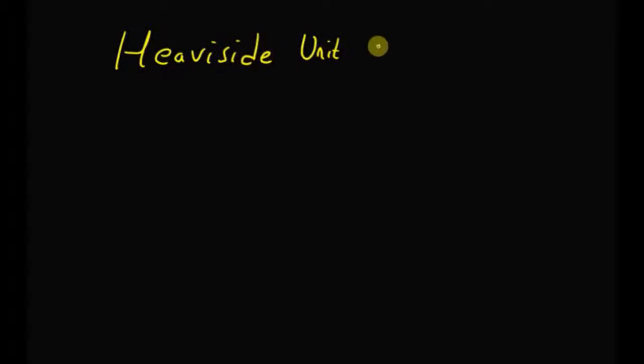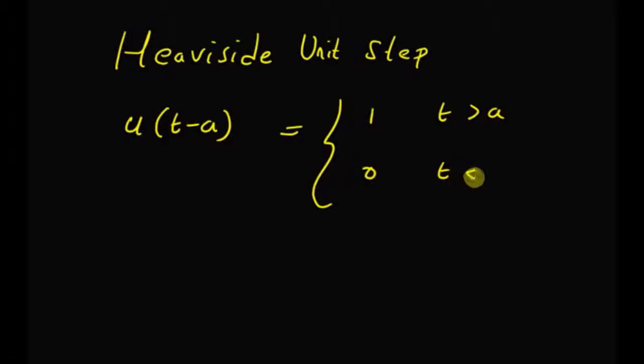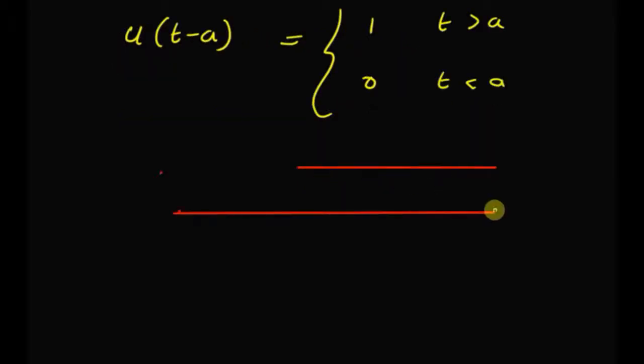Hello, welcome. In this short video, let us look at the Laplace transform of the Heaviside unit step function. The Heaviside unit step function is defined as u of t minus a, which equals 1 for t greater than a and 0 for t less than a.